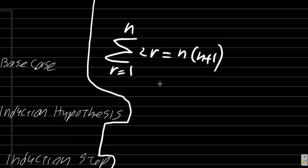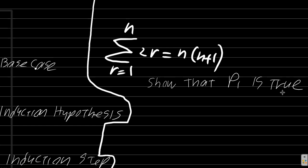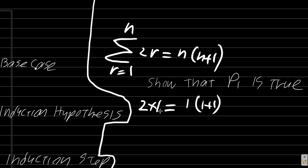The base case is where we say we will show that p1 is true, just as before. So when we have the first term, r is 1, there is 2 times 1. n also happens to be 1, because n is the number of terms you're adding up. So it's 1 times 1 plus 1.